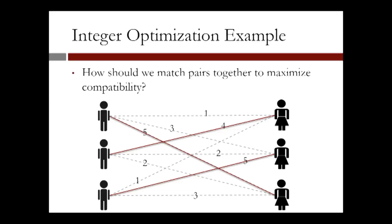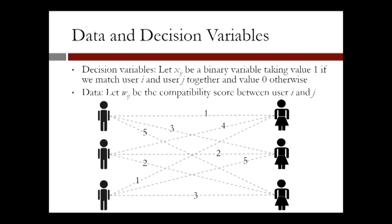Let us now formulate this matching problem in the language of integer optimization. We denote the data for the matching problem as w subscript ij. These numbers represent the compatibility score between user i and user j. In the example shown in the figure, w subscript 1,3 is 5.